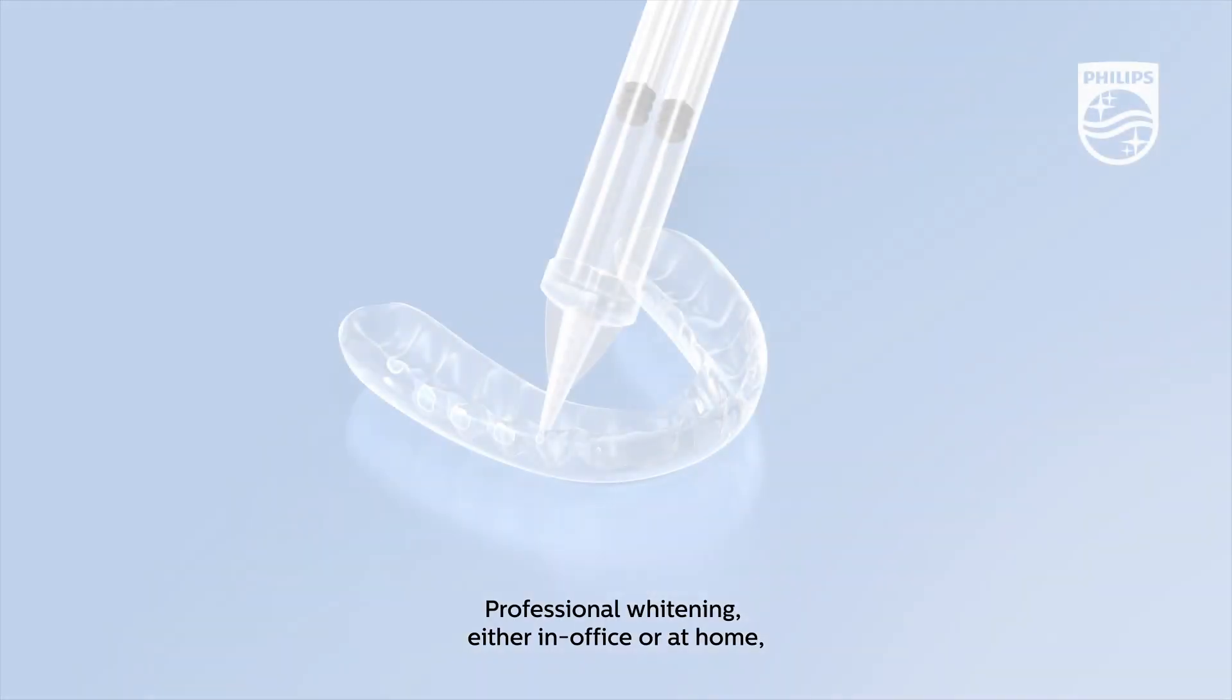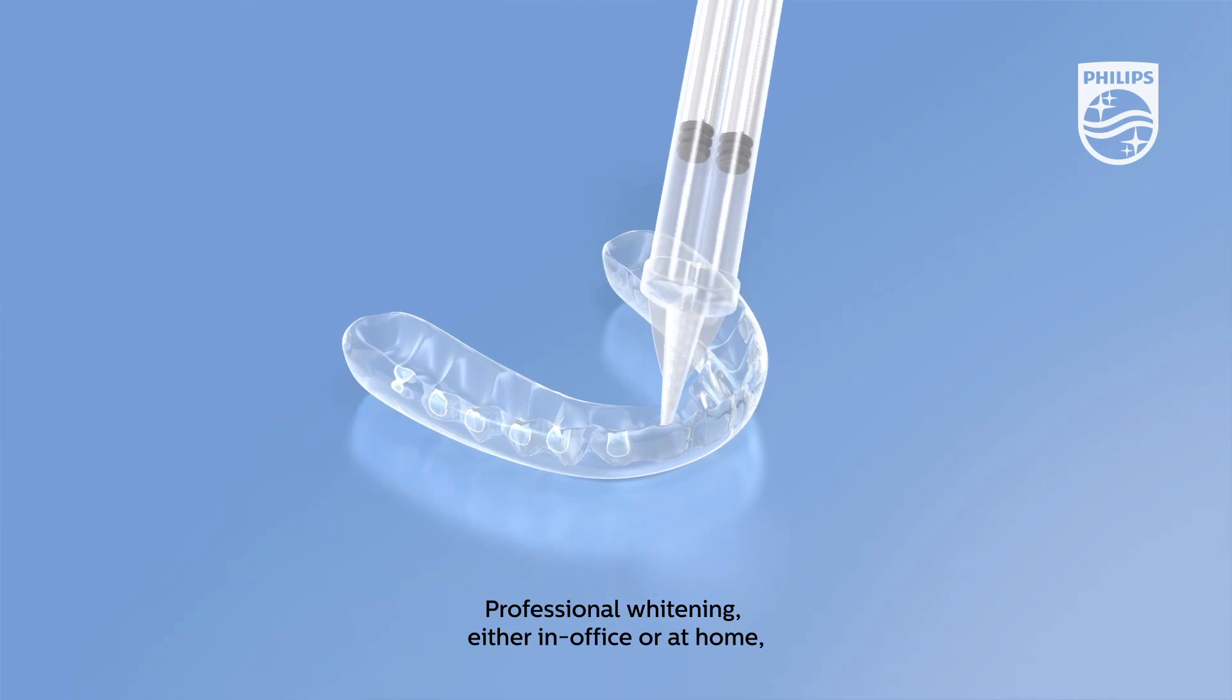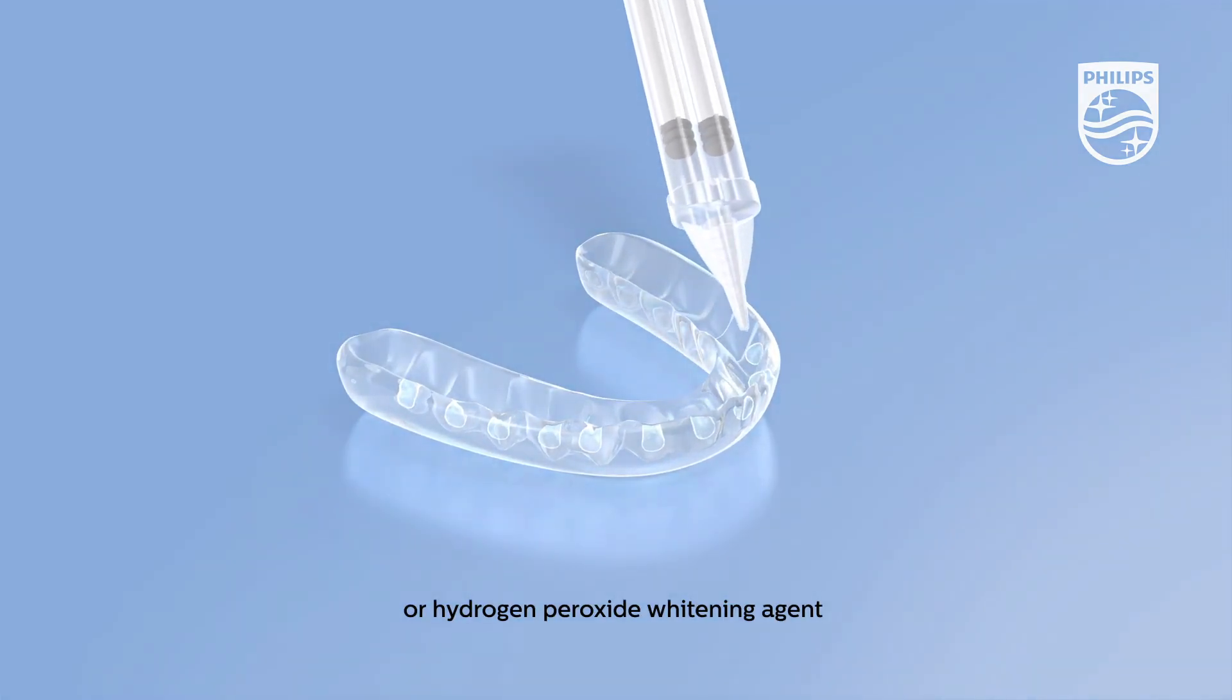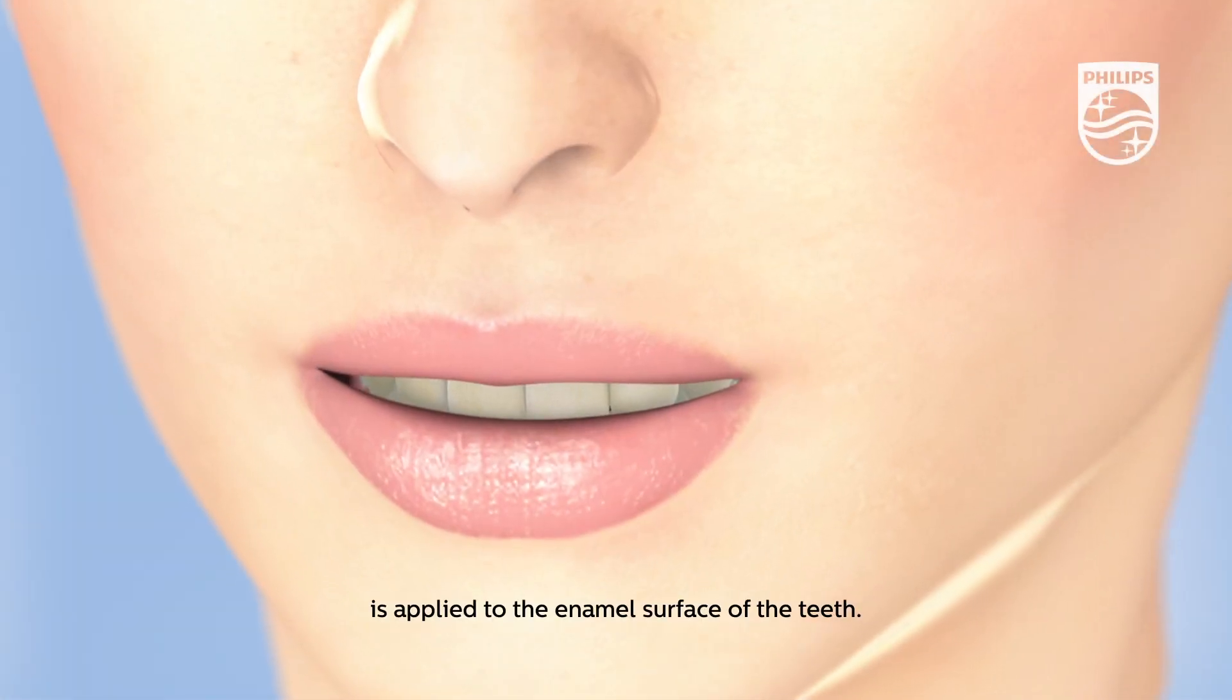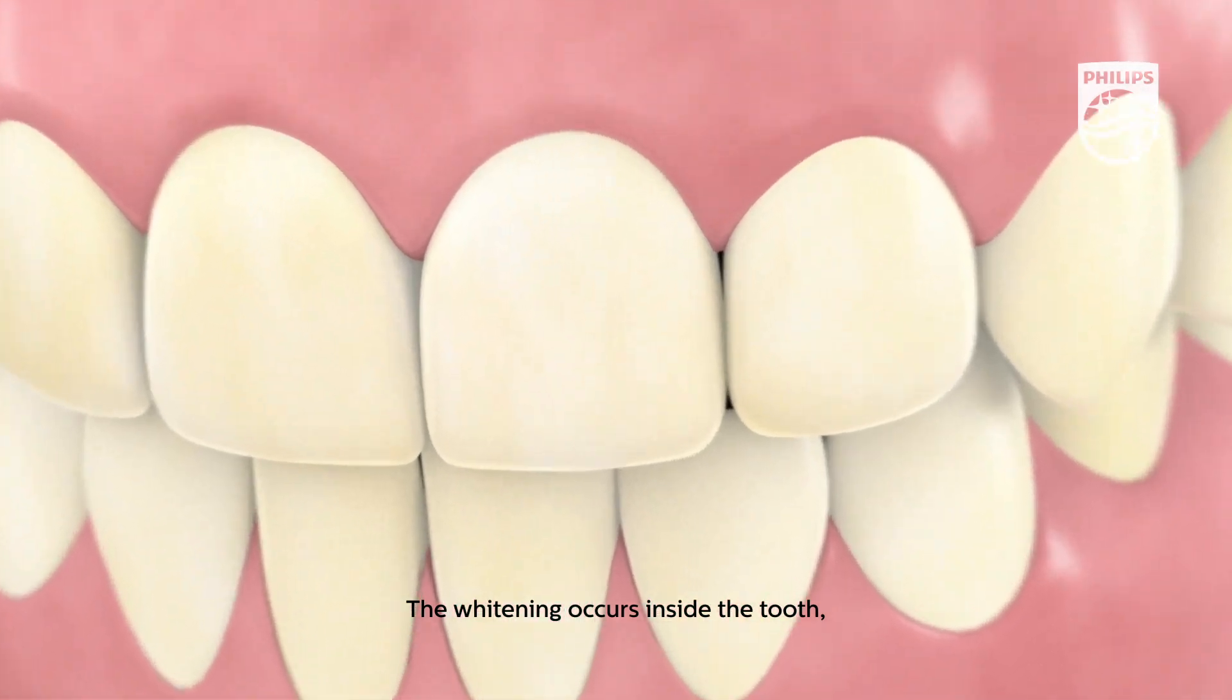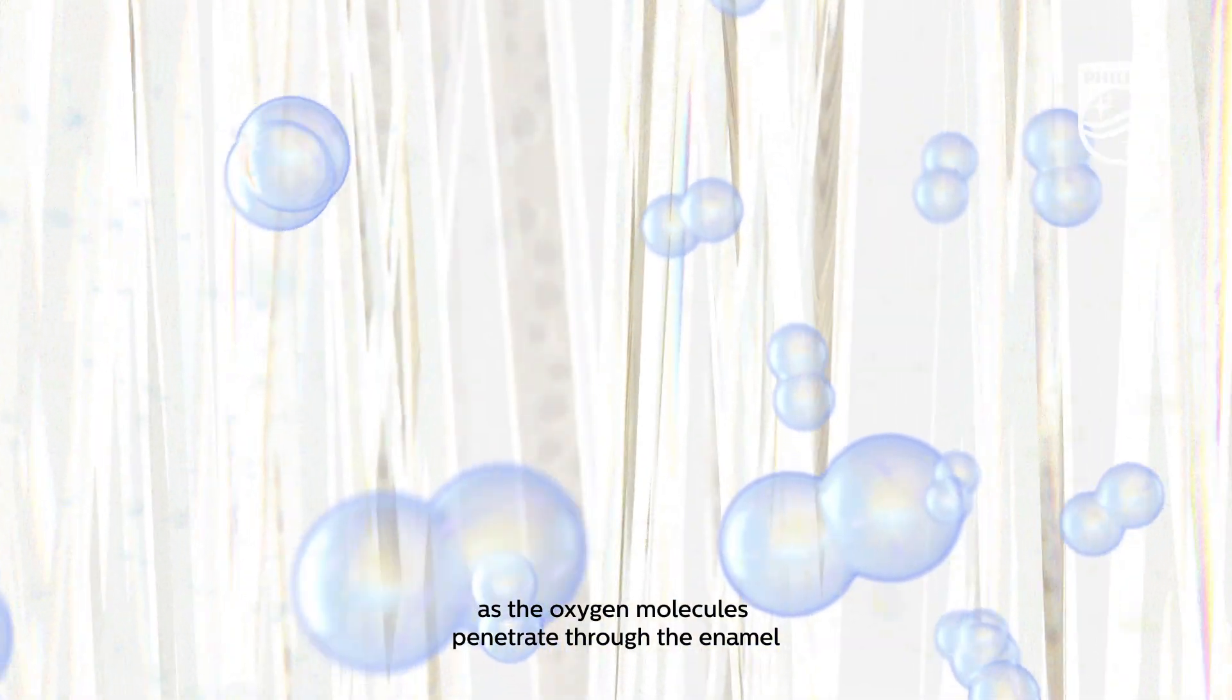Professional whitening, either in-office or at home, begins when a carbamide peroxide or hydrogen peroxide whitening agent is applied to the enamel surface of the teeth. The whitening occurs inside the tooth as the oxygen molecules penetrate through the enamel to reach the discolored molecules within the dentin.